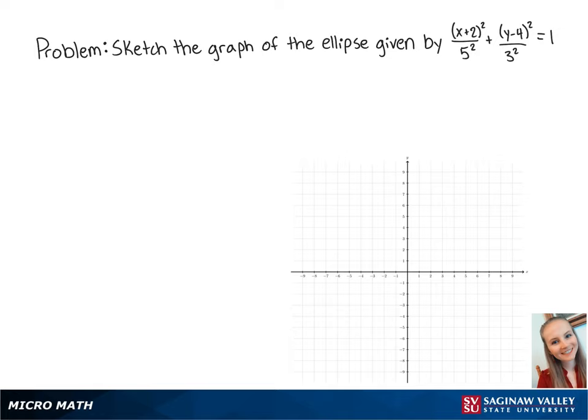For this problem, we're going to sketch the graph of the ellipse given by (x+2)²/25 + (y-4)²/9 = 1.